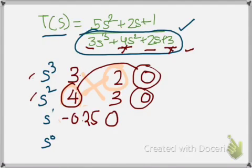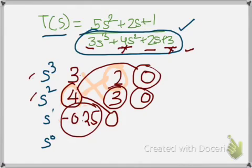So the next thing is multiplying this number and this number, which is 3 into minus 0.25, minus 0 into 4, divided by minus 0.25.